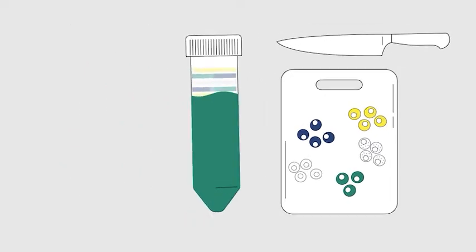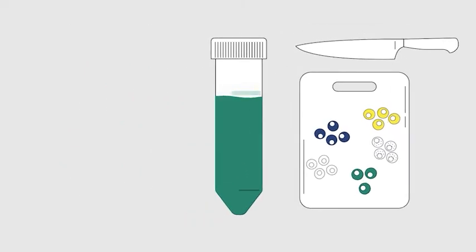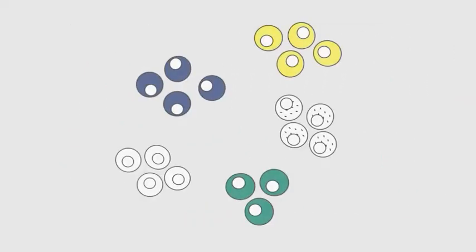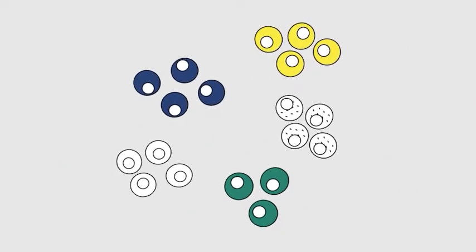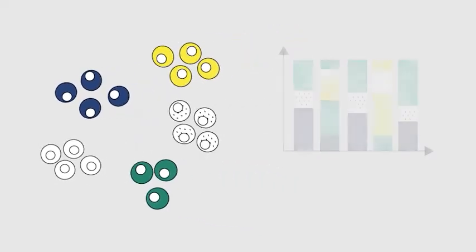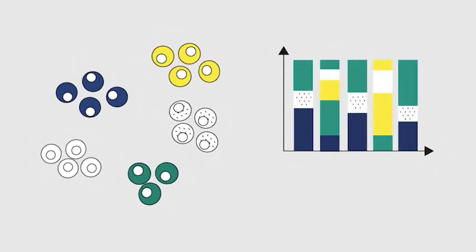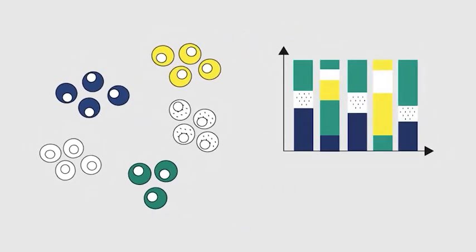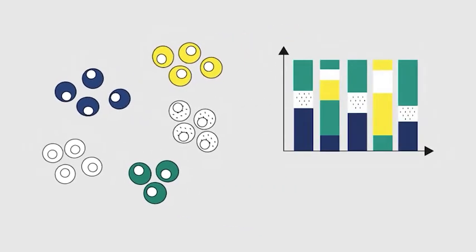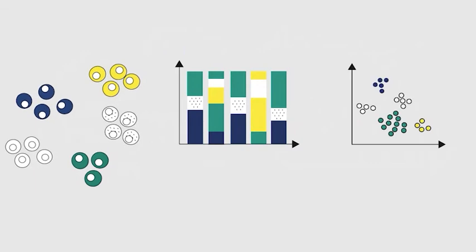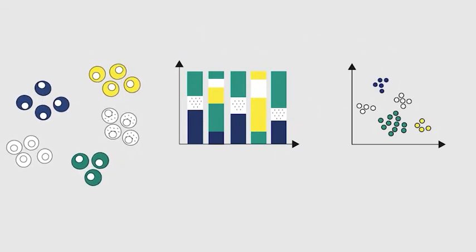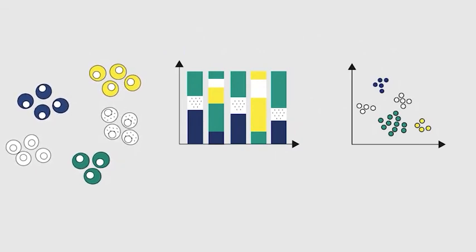Instead of analyzing the content of a mix of cells, you can analyze the content of each individual cell. And as a result, you can trace the heterogeneity within the sample and get a more accurate representation of the tissue in its original state.